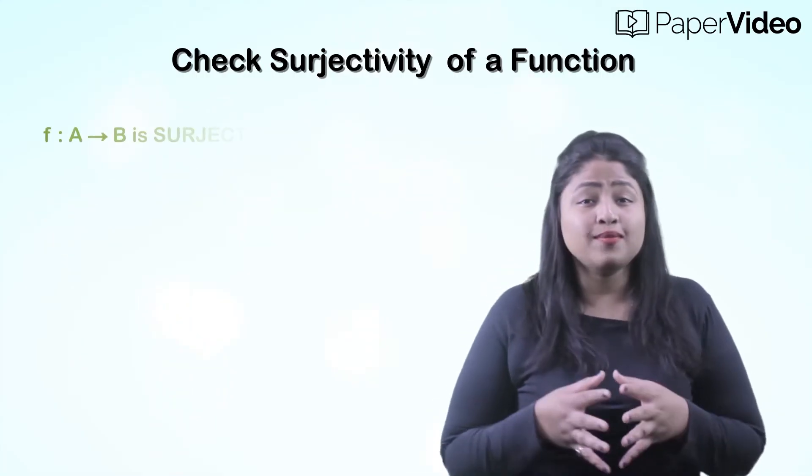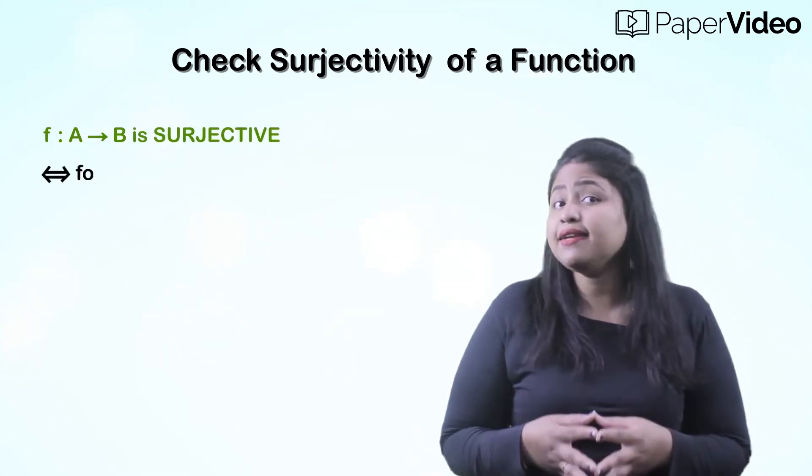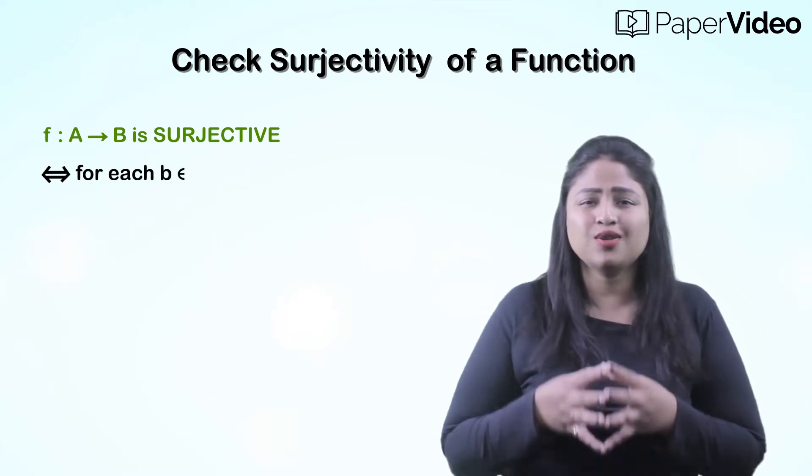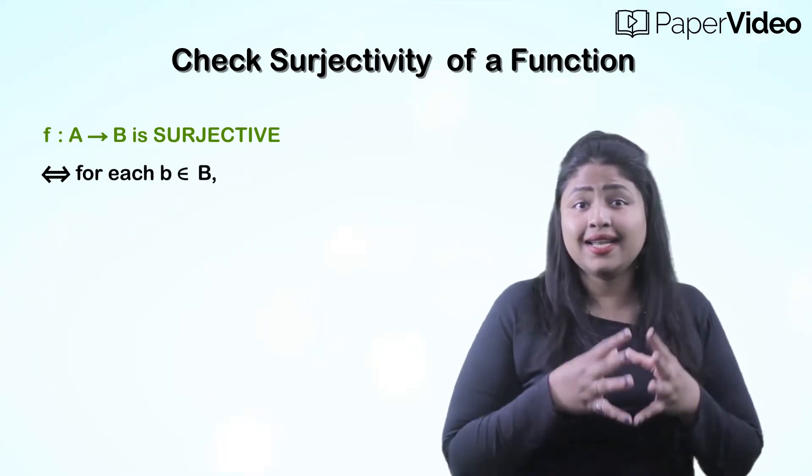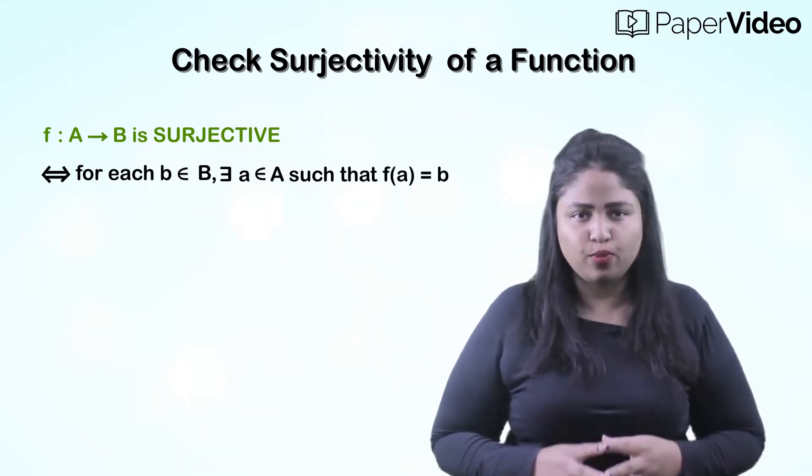A function f from set A to set B is said to be surjective if and only if for each b belonging to set B, there exists an element a belonging to set A such that f(a) equals to b.